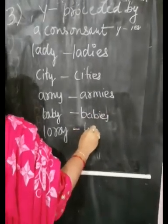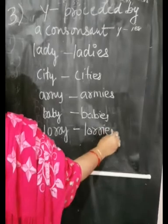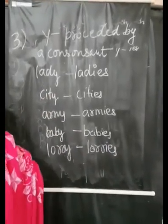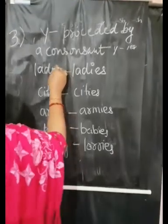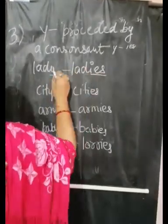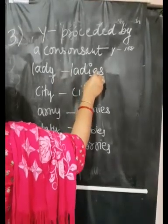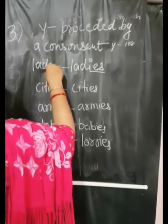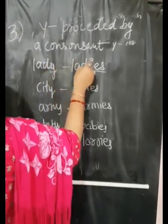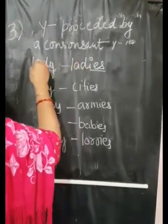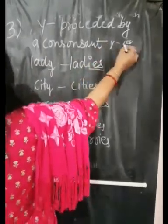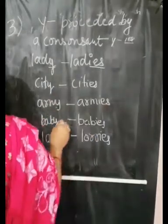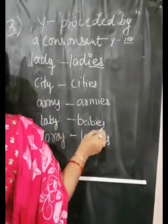Lorry becomes lorries. To summarize Rule 3: nouns ending in Y preceded by a consonant form their plural by changing Y to IES. City becomes cities, army becomes armies, baby becomes babies, lorry becomes lorries.